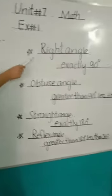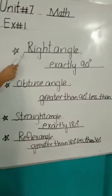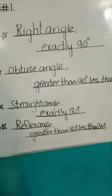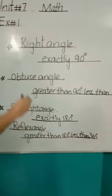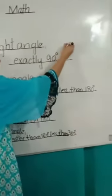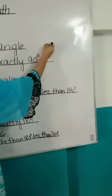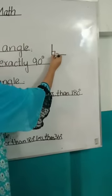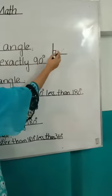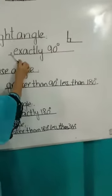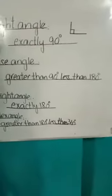Now the next angle: right angle. Right angle is exactly 90 degrees. We learn about right angle — it is exactly 90 degrees.